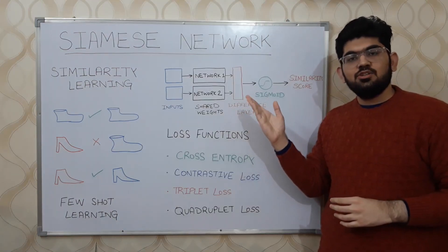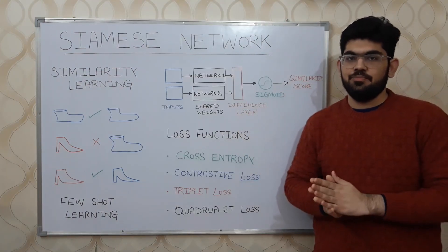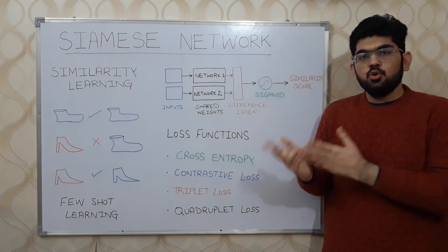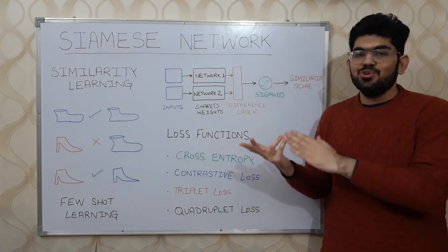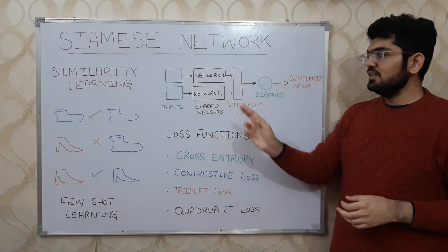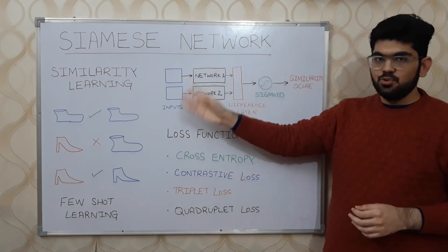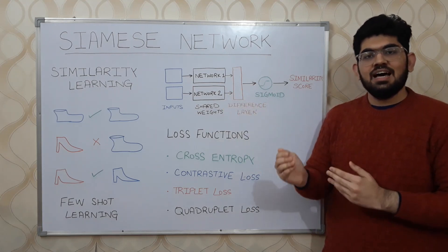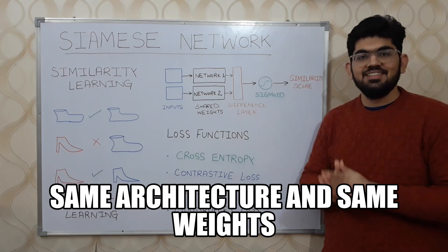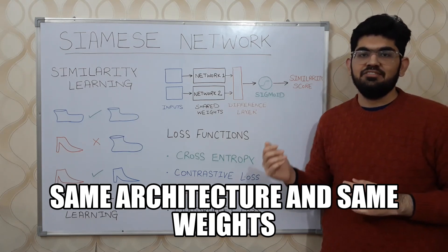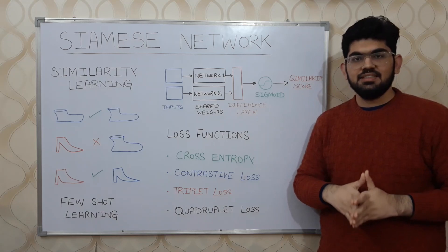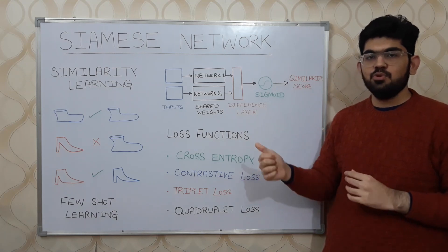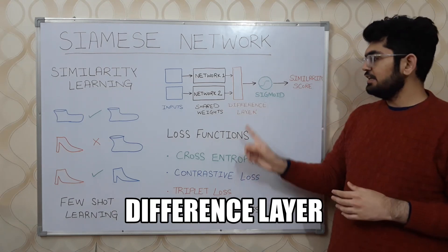This particular architecture is an example of a Siamese network. Instead of a single input, we are required to give two or more inputs to two or more neural networks. In this case, we are giving two inputs to two different neural networks. These two neural networks are an exact replica of each other — they have the same architecture as well as their parameter weights. As a first step, these two inputs are passed to convolutional neural networks, and then the output is passed to a separate layer called the difference layer.